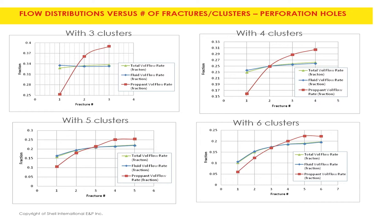This shows the flow distribution in the different fractures, and the red line is the solid particle distribution. You can see that with more clusters the variation changes. It looks like with more clusters it gets at least slightly more even. Five seems to be optimal.